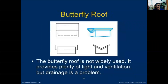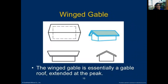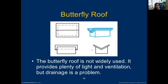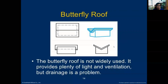The wing gable is essentially a gable roof extended at the peak, shaped like a wing. This is common in areas like Zamboanga and Cotabato, used in restaurants and airports. The butterfly roof is similar to the sawtooth roof and provides good light and ventilation, but drainage is the main problem as water collects in the inside gutter at the middle.